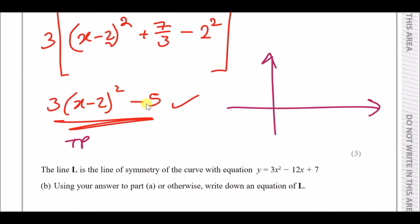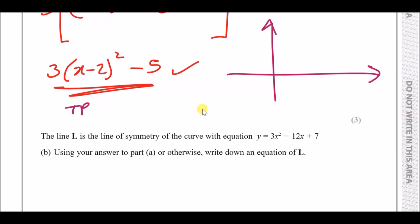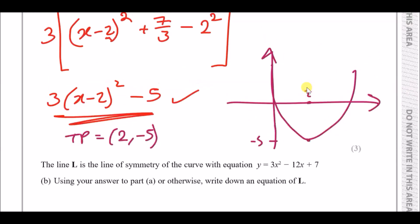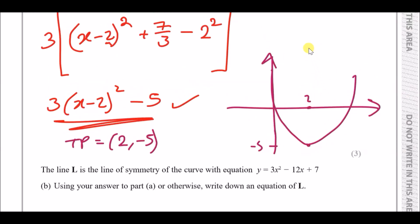The turning point is at x equals positive two and y equals negative five. It's always opposite in sign from what you see in the bracket. So the curve's lowest point is at (2, −5). Because it's a quadratic it has perfect symmetry, meaning the line of symmetry passes through x equals two.